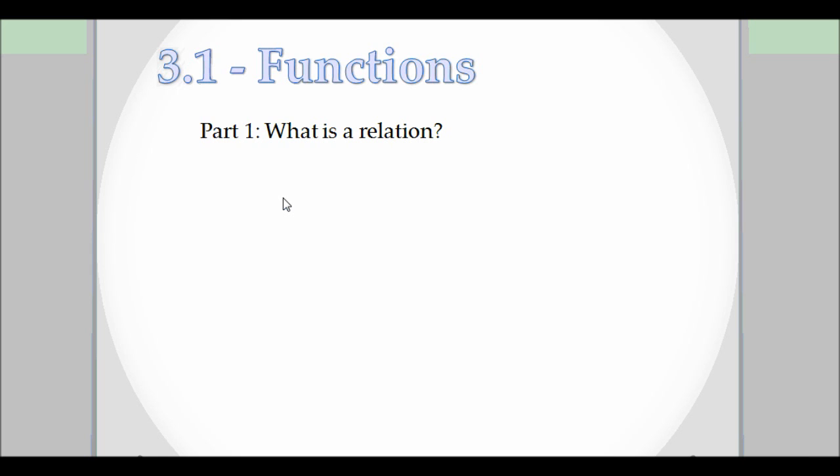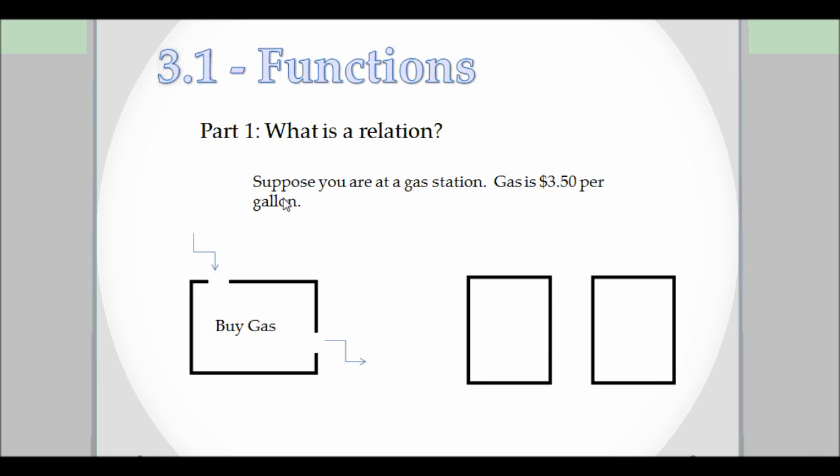Think of it like a relationship, an association. Suppose you go to a gas station, and at the gas station it's $3.50 per gallon. So how does a relation work? We use what we call the black box method, as in a relation is a black box, and you put something in it and it gives you something else.